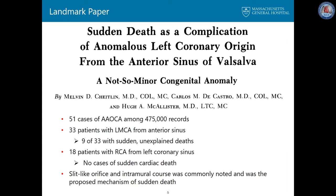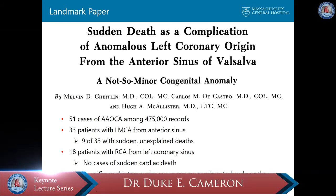A landmark paper on this subject was by Melvin Chitlin. He reported 51 cases of anomalous aortic origin among 475,000 military recruits. In that series, there were 33 patients who had left coronary from the right coronary sinus. Nine of these 33 presented with sudden unexplained death. There were 18 patients with a right coronary artery from the left sinus and no cases of sudden cardiac death. When sudden death occurred, most often a slit-like orifice and an intramural course was noted.